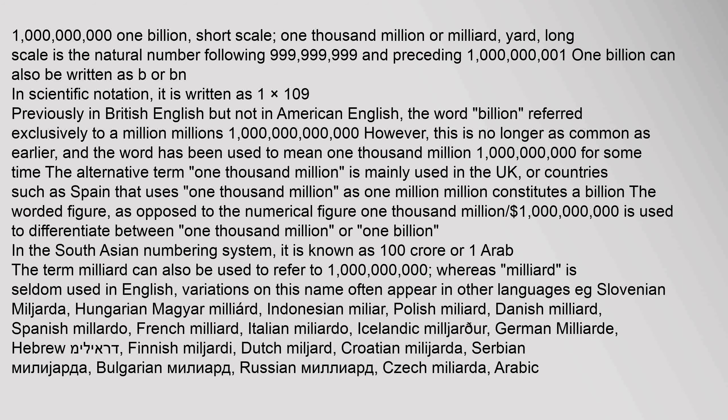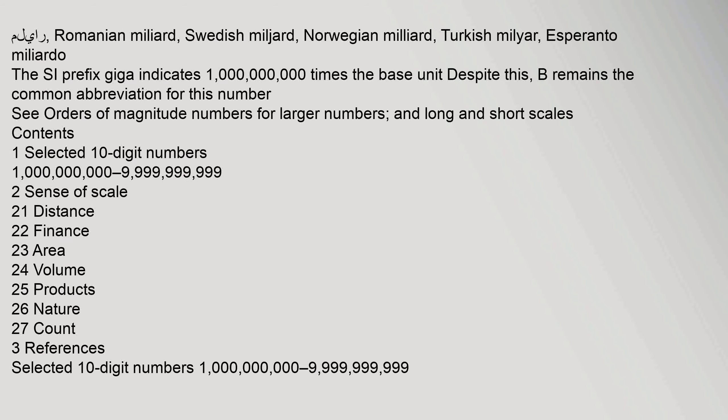Variations on this name often appear in other languages — for example: Slovenian milharta, Hungarian milliard, Indonesian milliard, Polish milliard, Danish milliard, Spanish milliard, French milliard, Italian milliard, Icelandic milliard, German milliard, Hebrew milliard, Finnish milliard, Dutch milliard, Croatian milliard, Serbian milliard, Bulgarian milliard, Russian milliard, Czech milliard, Arabic, Romanian milliard, Swedish milliard, Norwegian milliard, Turkish milliard, and Esperanto milliardo.